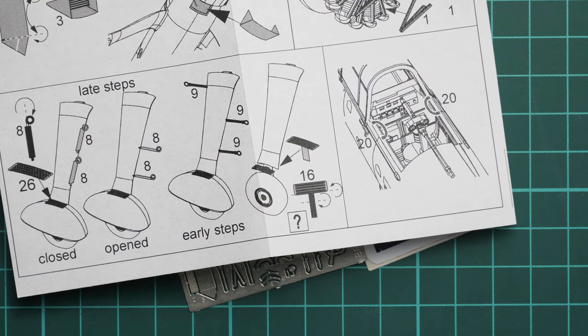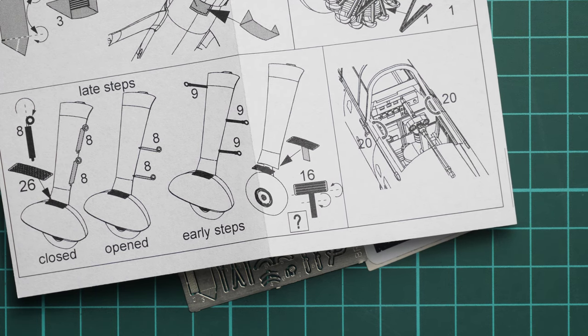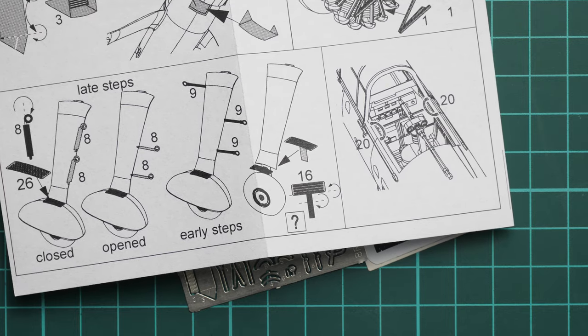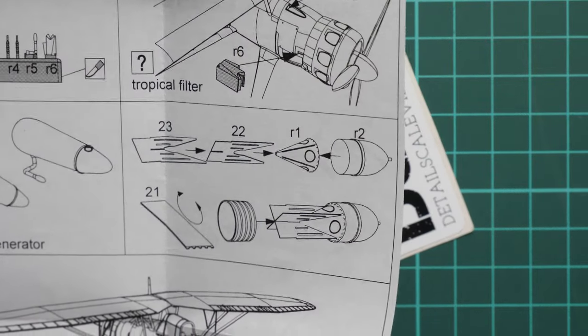Here you can see some upgrades for the landing gear, again for the open or closed position and also for the early or late version, which is quite interesting because it basically provides us with all necessary parts for both editions of the aircraft.